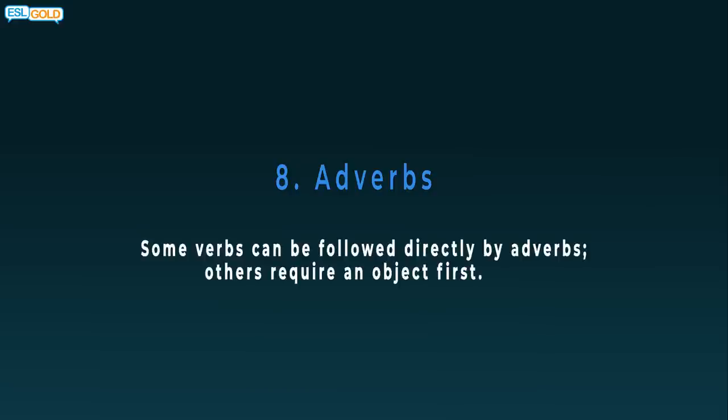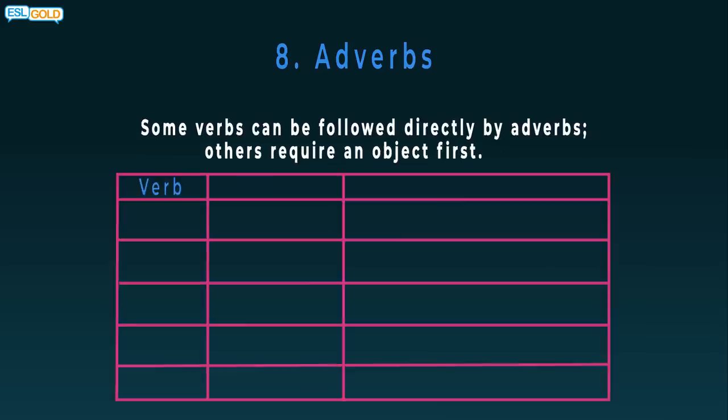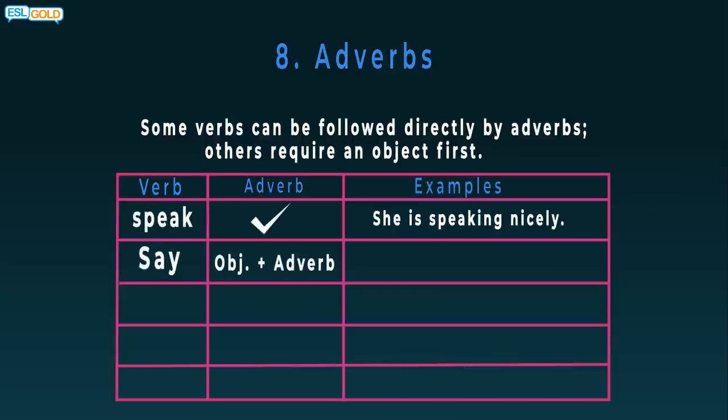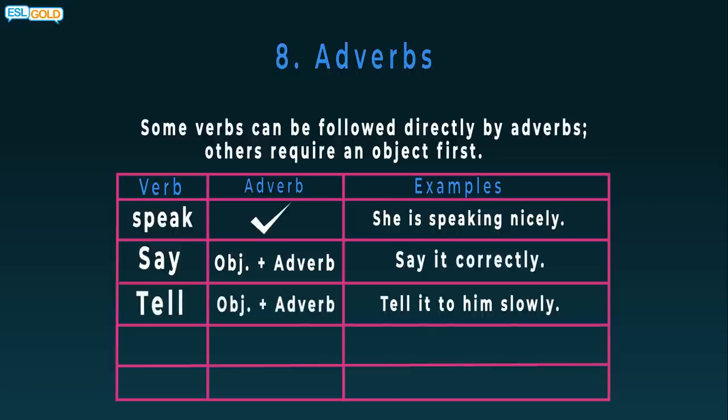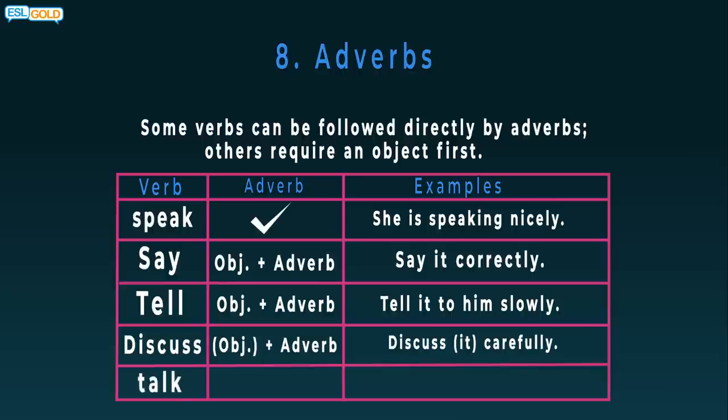Adverbs. Some verbs can be followed directly by adverbs. Others require an object first. Speak: yes. She is speaking nicely. Say: object plus adverb. Say it correctly. Tell: object plus adverb. Tell it to him slowly. Discuss: sometimes an object plus adverb. Discuss it carefully. Sometimes we can say discuss carefully. Talk: yes. She talks quickly.